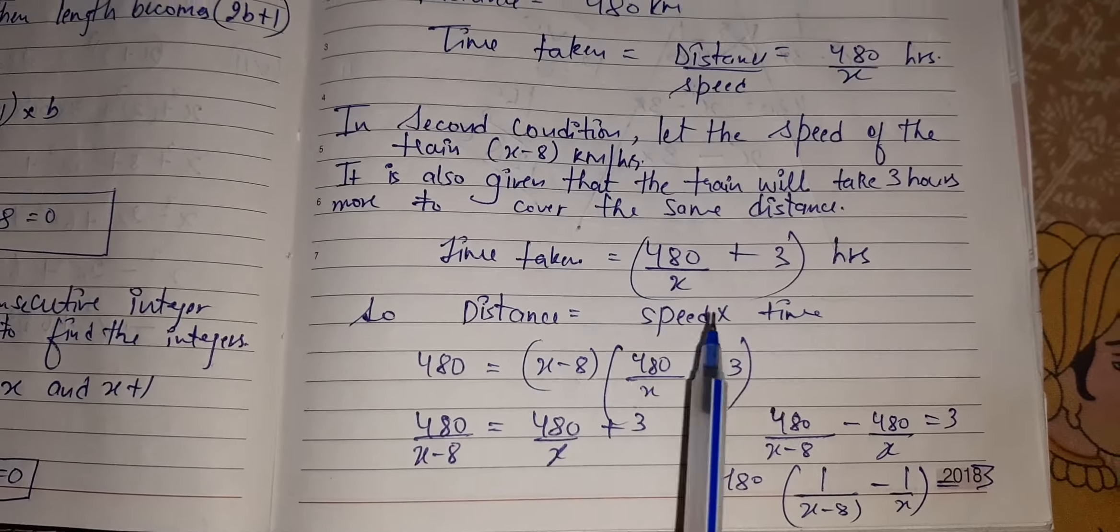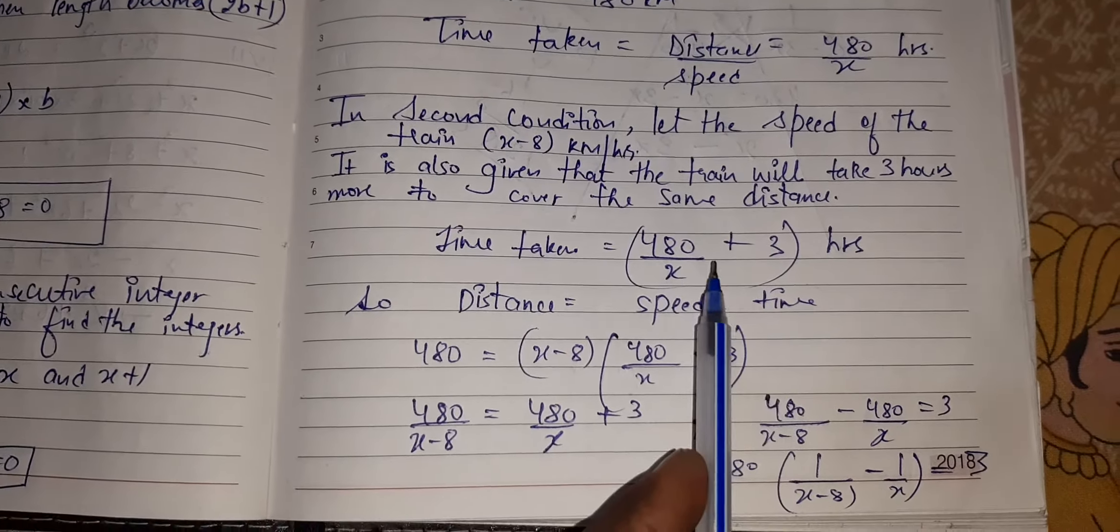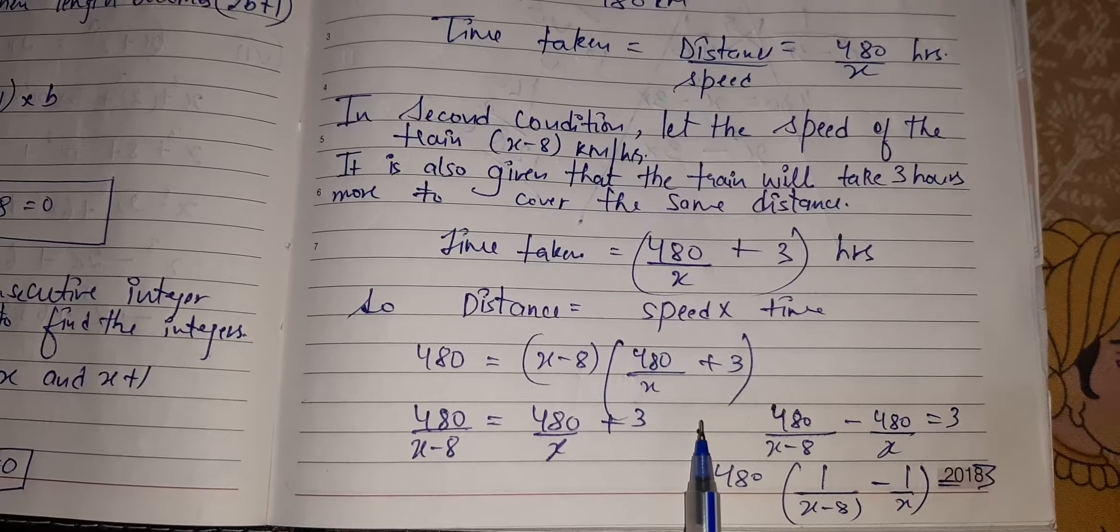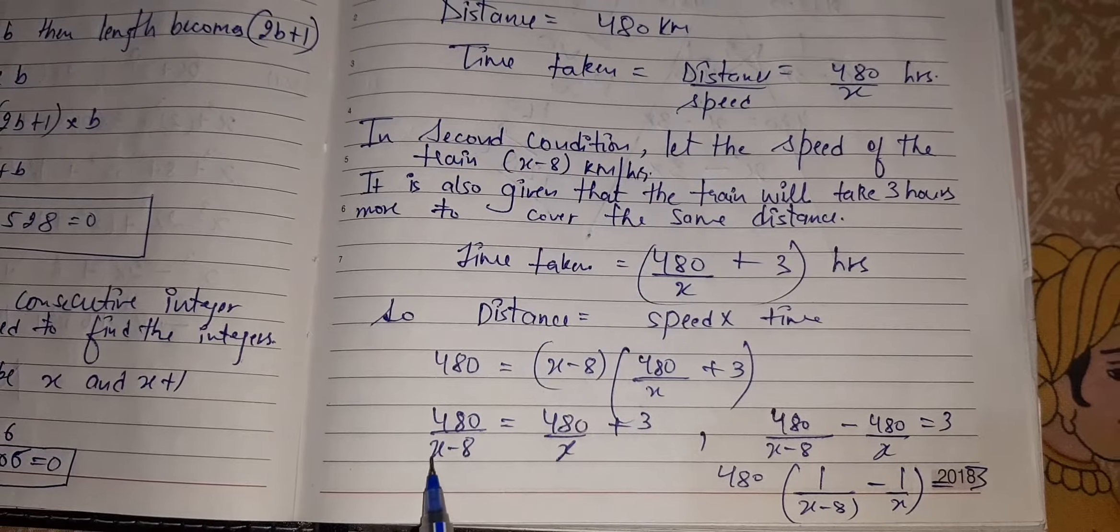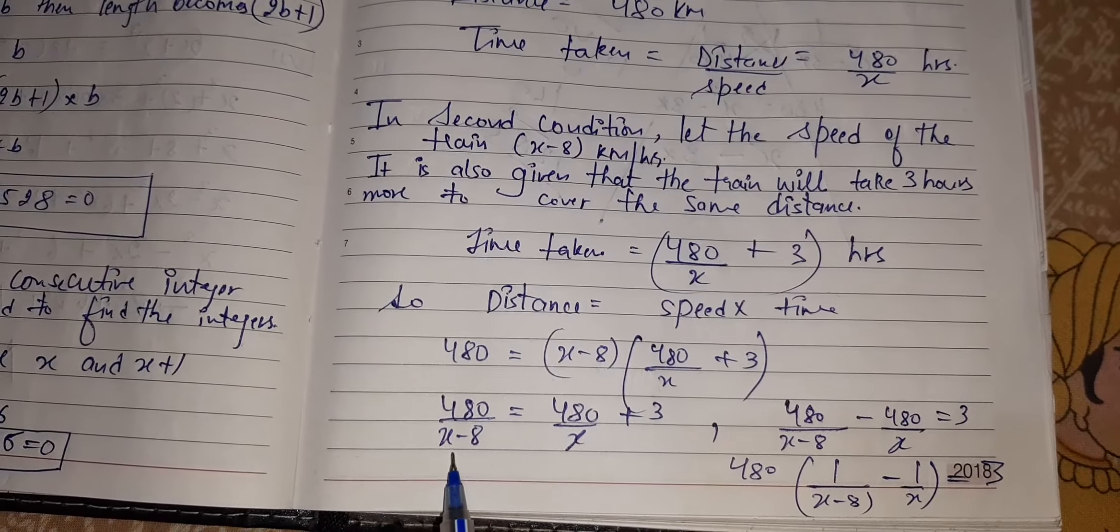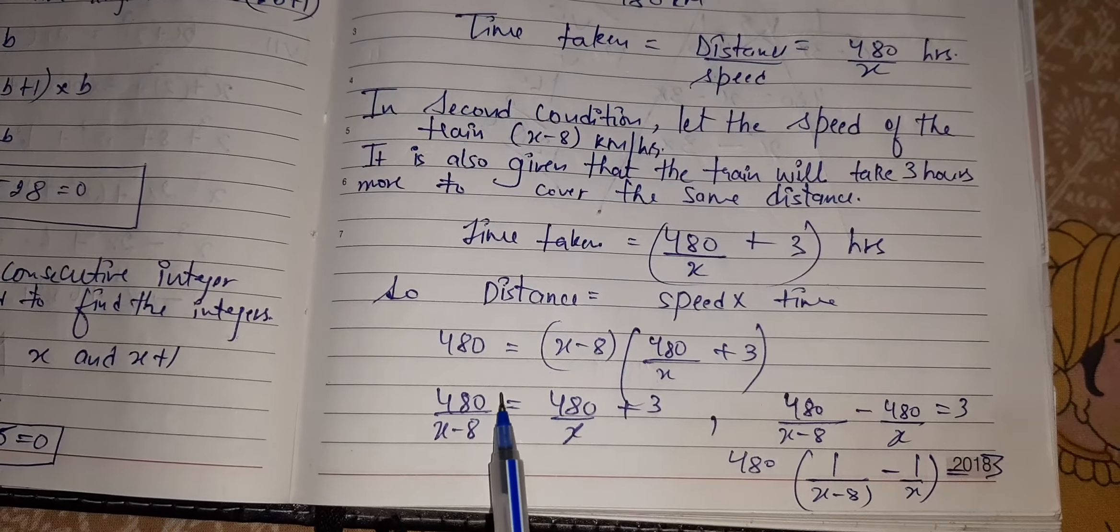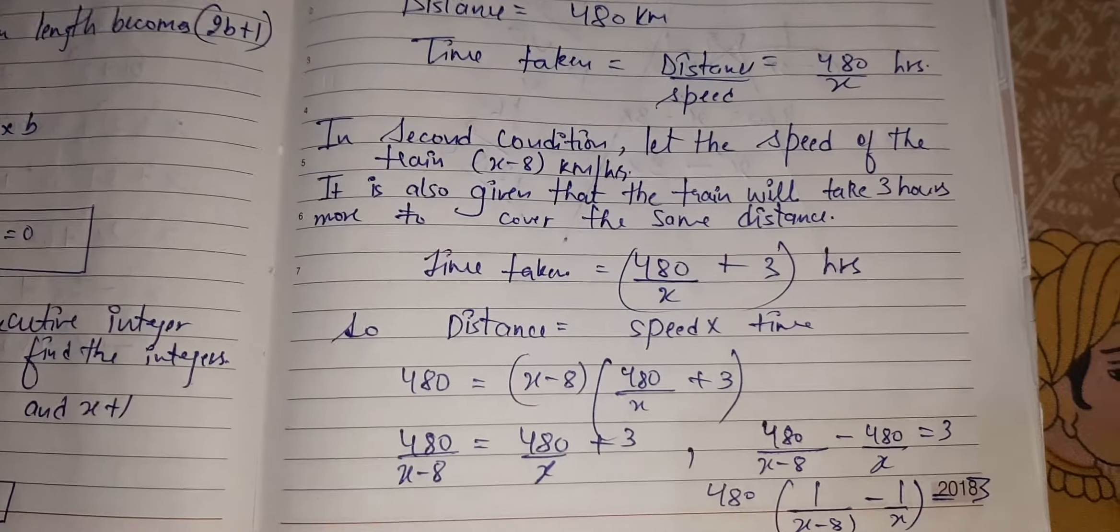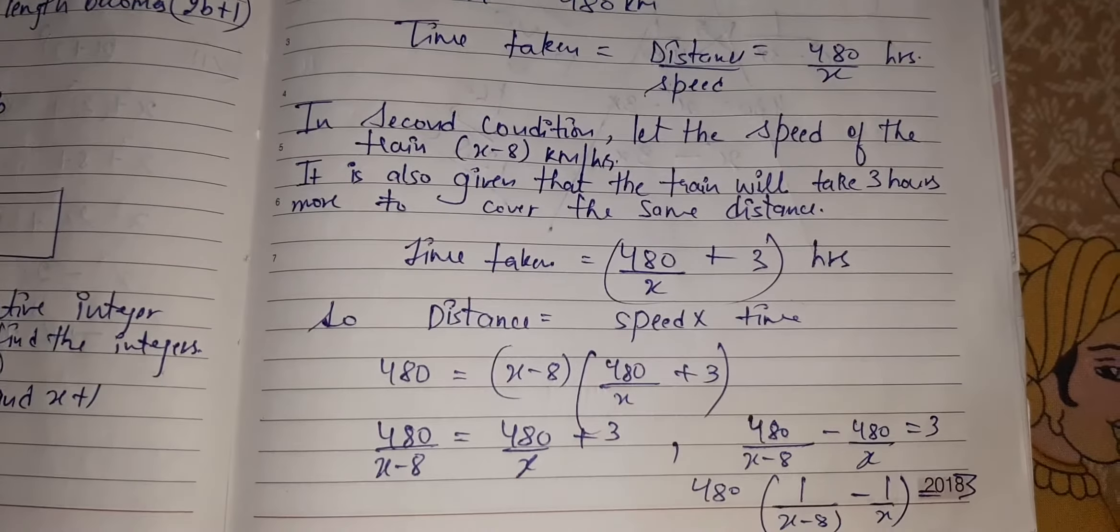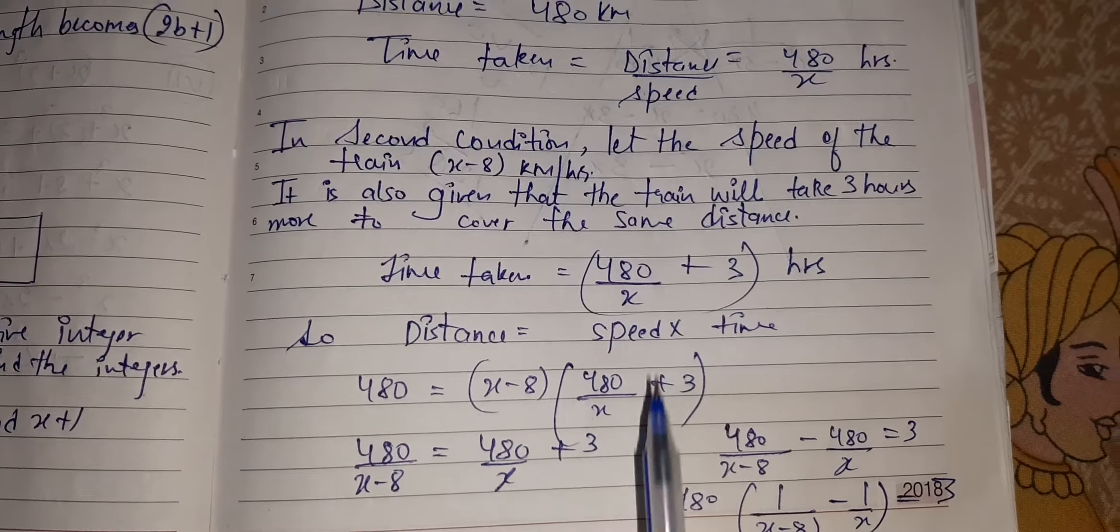Distance is 480. New speed, X minus 8. Time is 480 upon X plus 3. I bring this X minus 8 here. The equation will become 480 upon X minus 8 is equal to 480 upon X plus 3. I have brought this 480 upon X to this side minus 480 upon X.